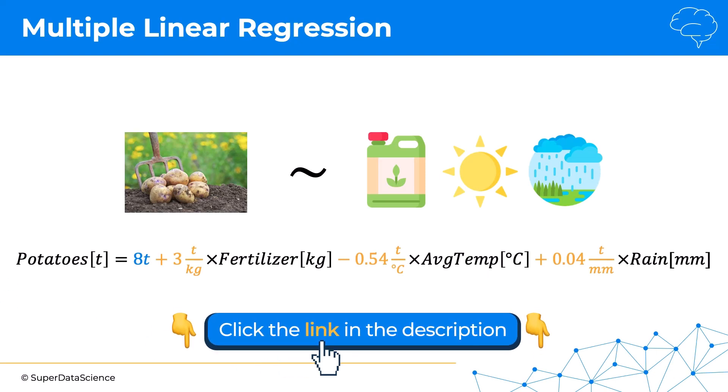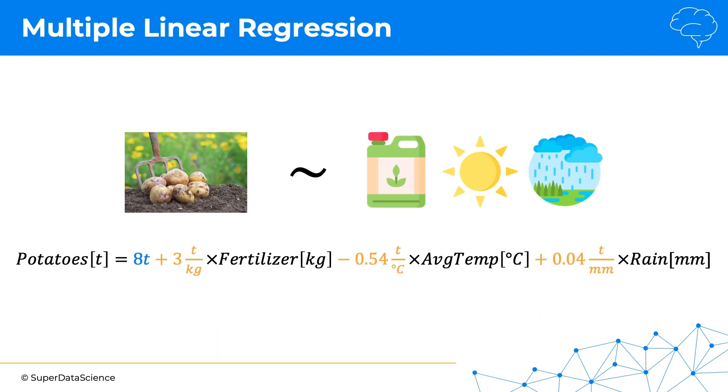The equation for potatoes would be, for example, 8 tons as the y-intercept, then 3 tons per kilogram for the fertilizer coefficient. For average temperature in degrees Celsius, we might have negative 0.54 tons per degree Celsius, which means the higher the temperature, the fewer potatoes will be yielded. For rainfall, it might be 0.04 tons per millimeter.